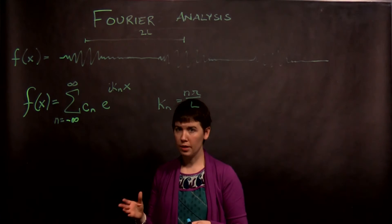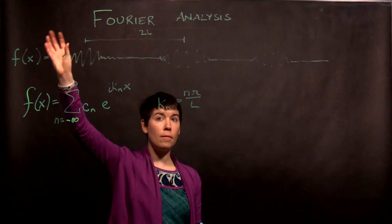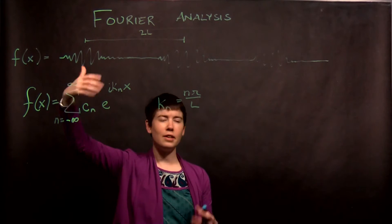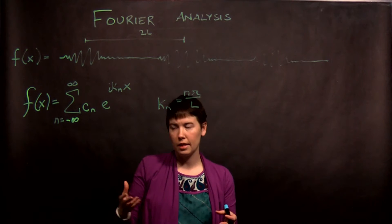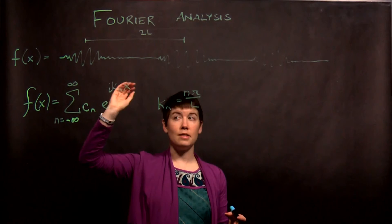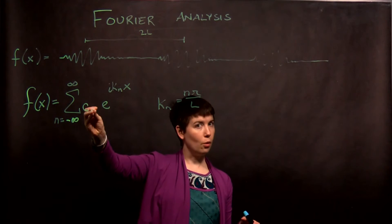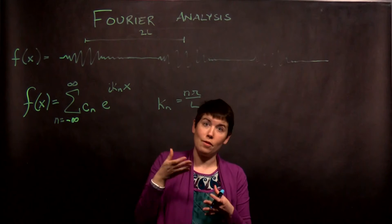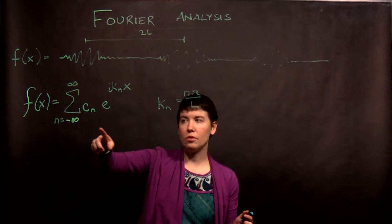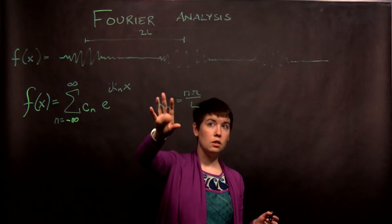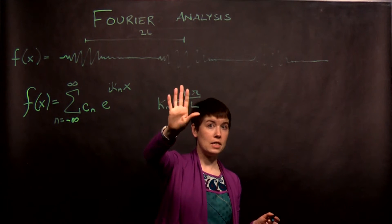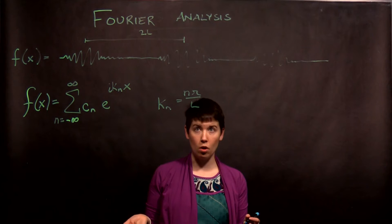So the starting point is, we assume we have some function of position. Again, this is going to be a wave function, but what we're starting with isn't specific to quantum mechanics. We can expand it as an infinite sum of coefficients - as always the game is, find the coefficients. So we have to find what these are. And then e to the i knx. And here we've specified what the form of kn is. So kn has a very specific form.